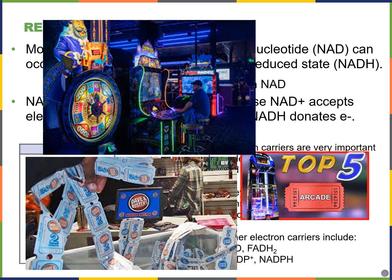NADH — nicotinamide adenine dinucleotide — has high potential energy in its reduced state. We don't usually use NADH directly to power regular body functions like moving muscles or breathing. We use it to generate ATP. I like to compare NADH to tickets at Dave and Busters or Chuck E. Cheese — they're valuable because you can trade them in for something else later. Similarly, we're ultimately going to trade in our NADH for the generation of ATP.